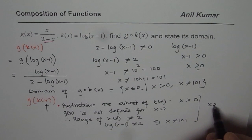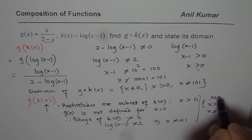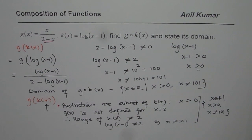So x is greater than 0, but x is not equal to 101. So that combination gives us the domain without calculating the result.